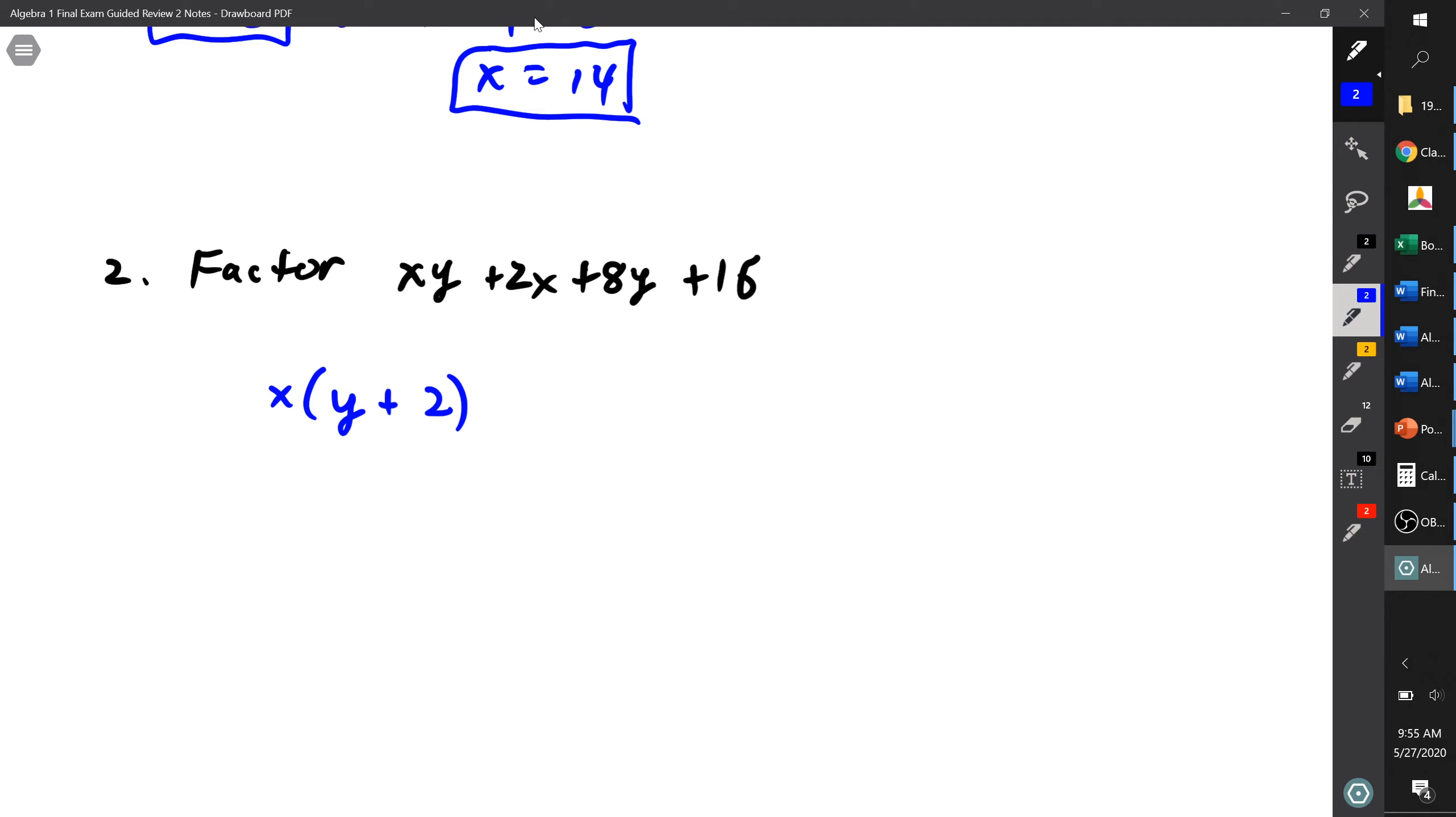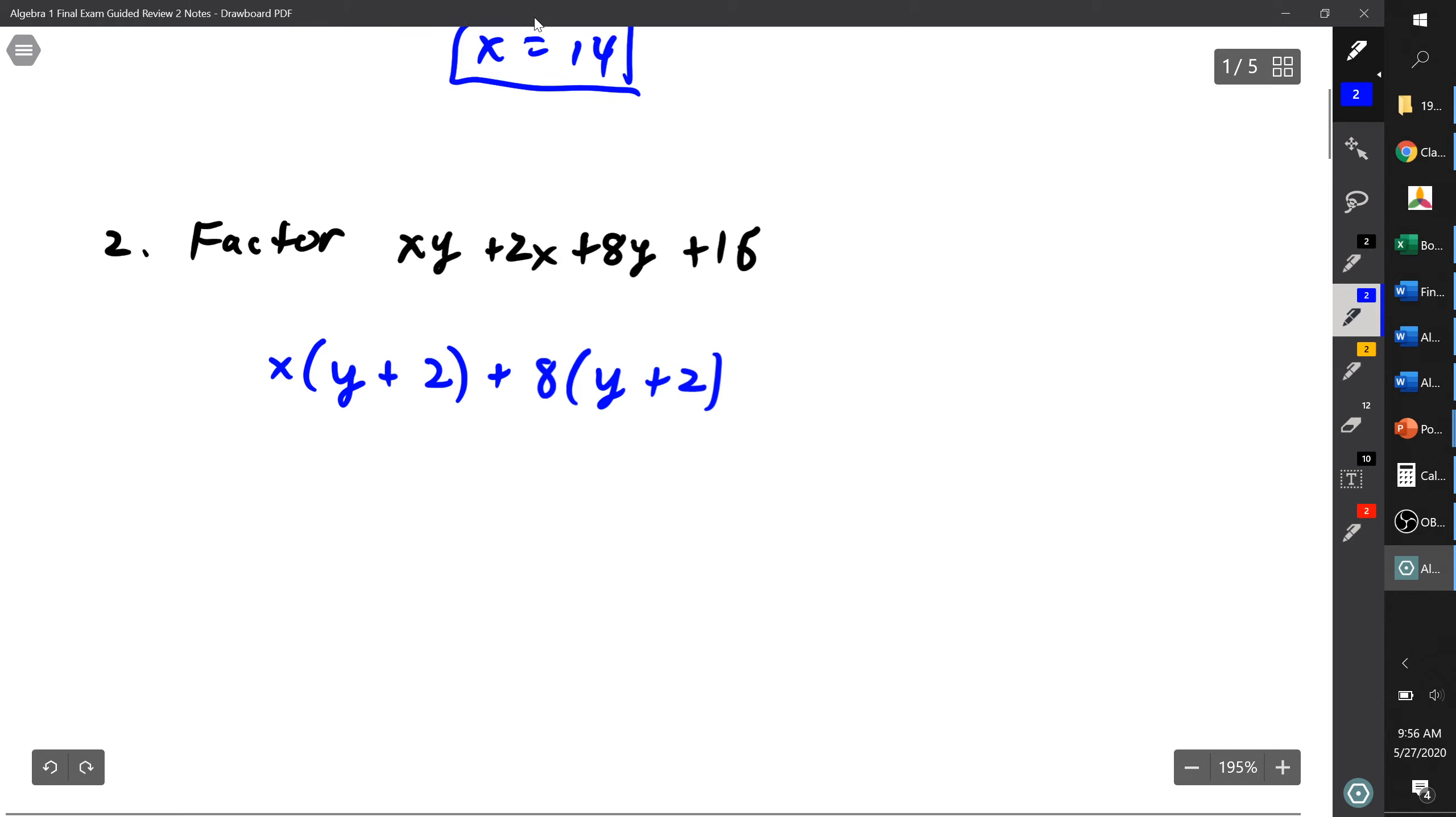And what can I factor out of the last two terms? I can factor an 8 out, so we have plus 8 times 8y over 8 is just y, plus 16 over 8 is 2. And yay, I have a y plus 2 and a y plus 2, so I can factor y plus 2 out of everything.